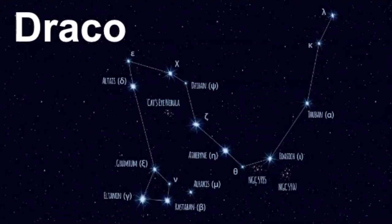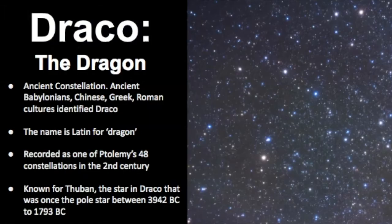My name is Janine and in this video we will learn about the constellation known as Draco. Draco is represented as a dragon and it's an ancient constellation. The ancient Babylonians, Chinese, Greek, and Roman cultures all identified Draco.